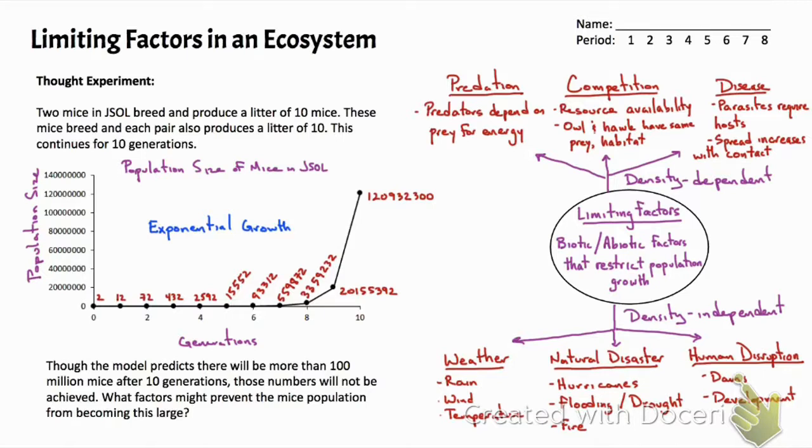One factor we do not have on here is habitat, and that's because both density-independent and density-dependent factors can influence habitat. For example, disease in trees might reduce the size of habitat for species like birds that might use those trees.